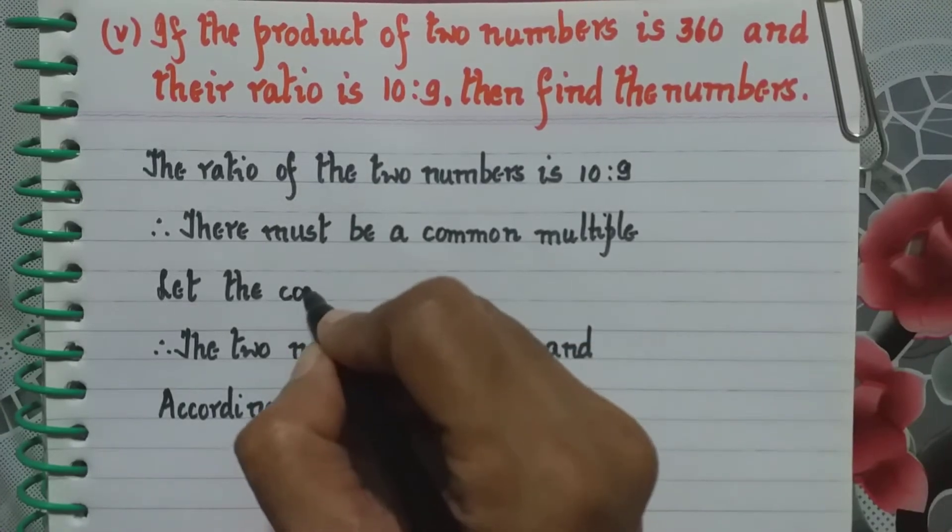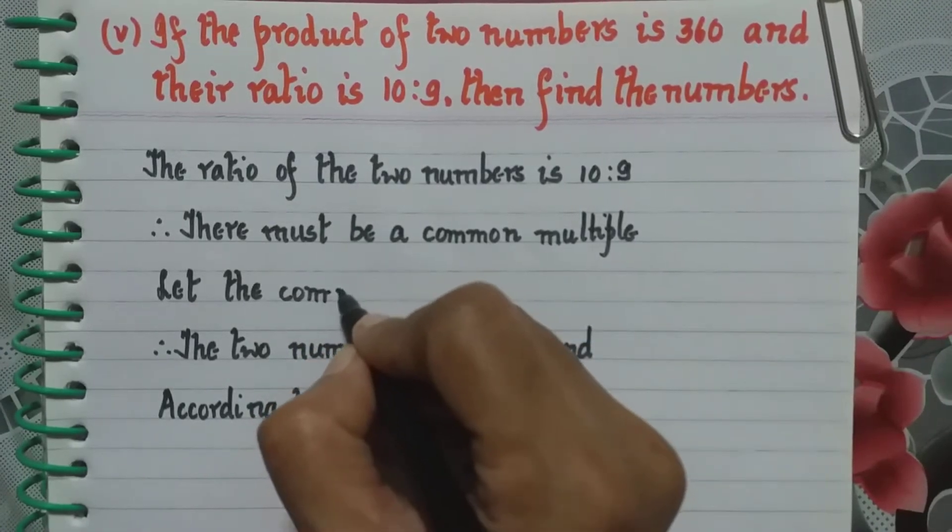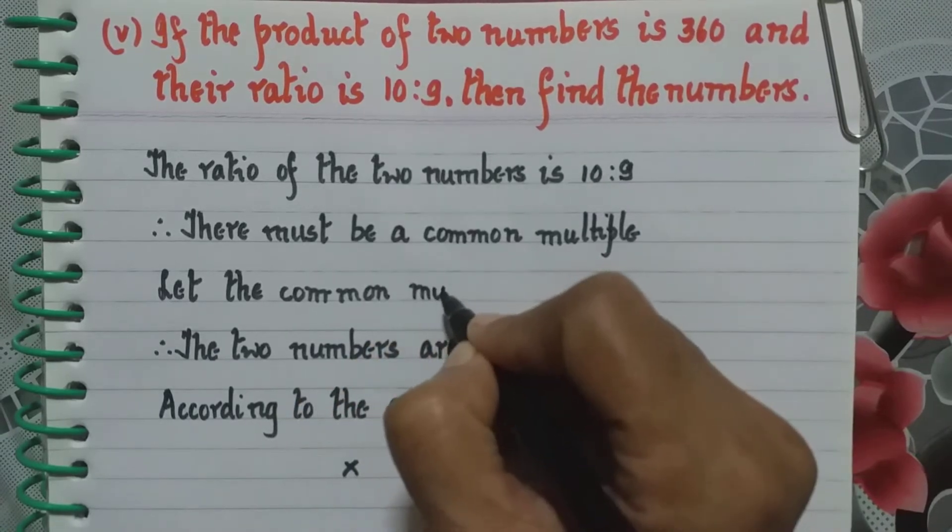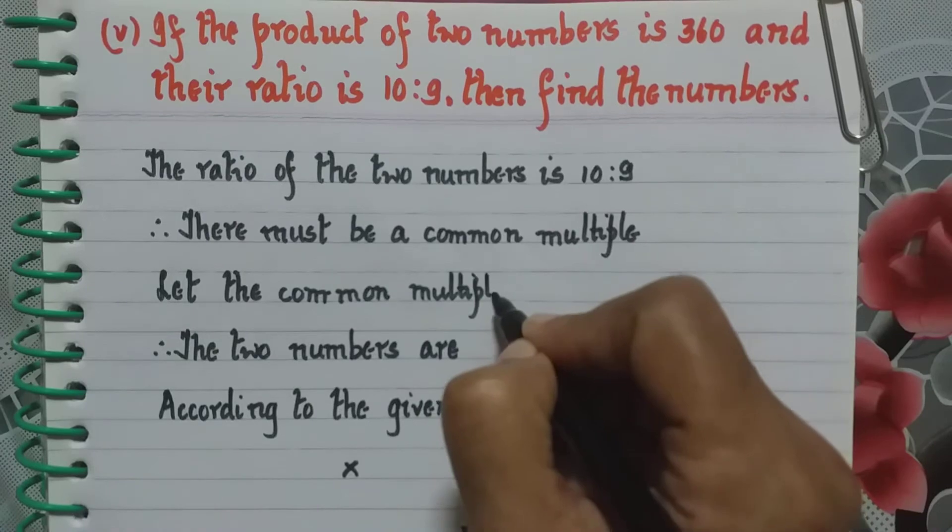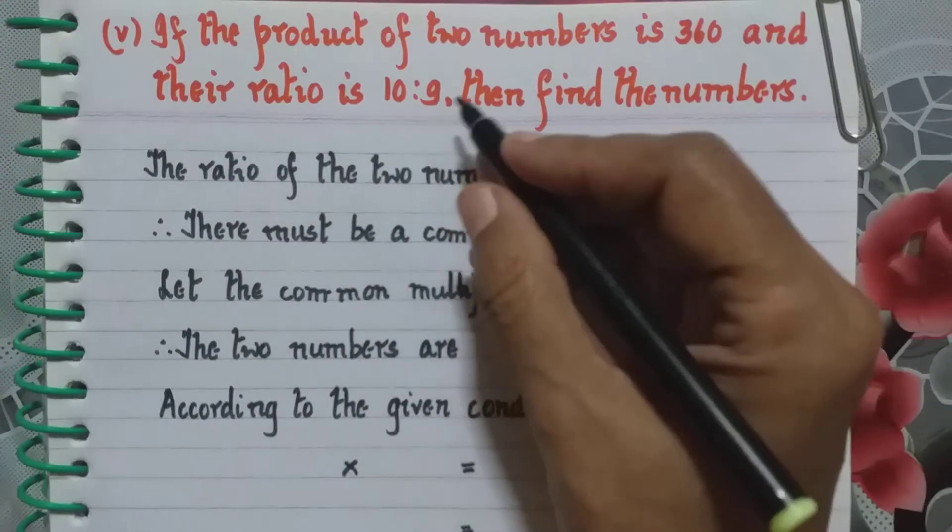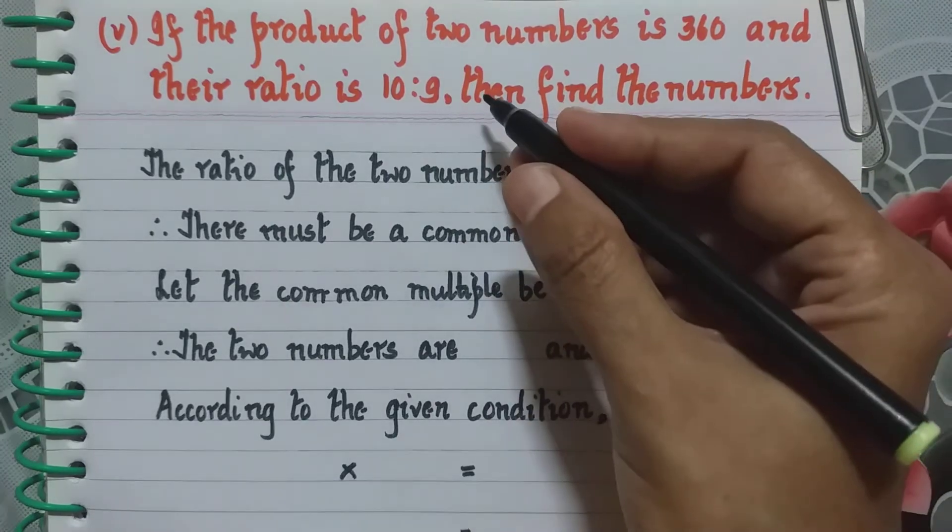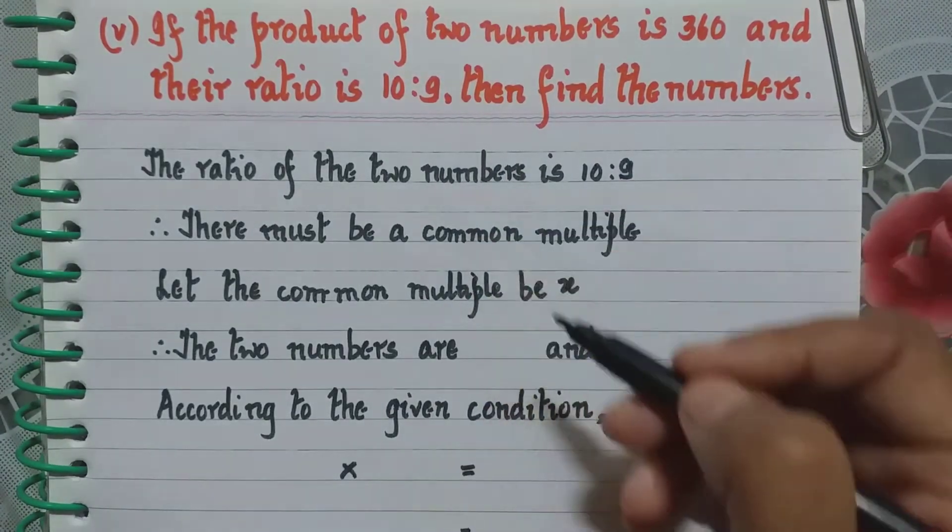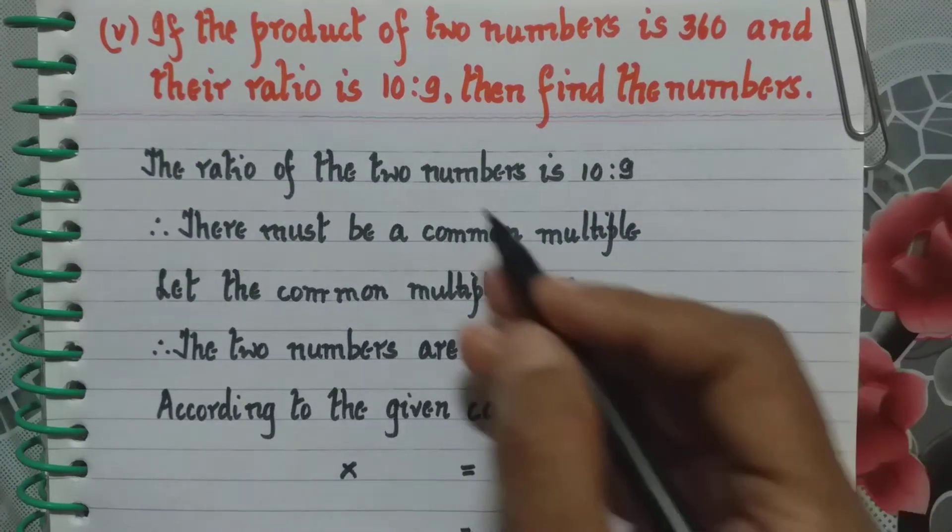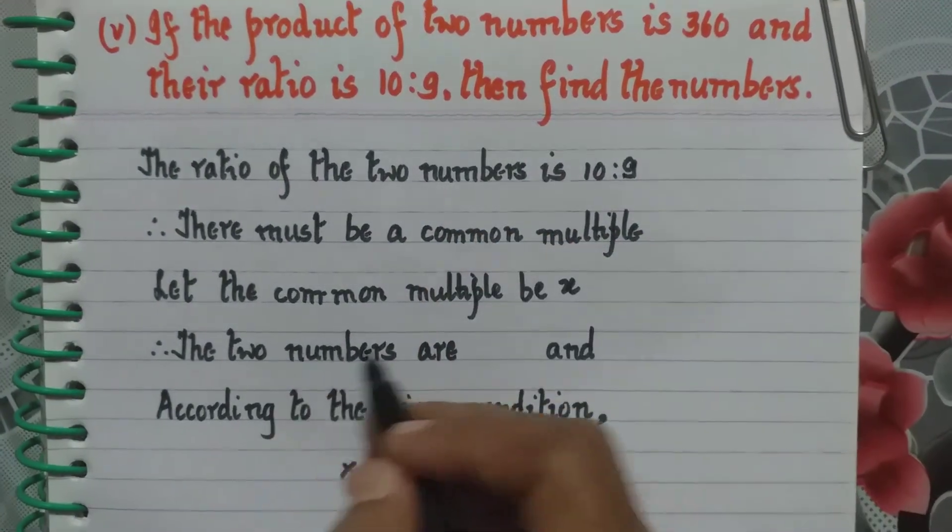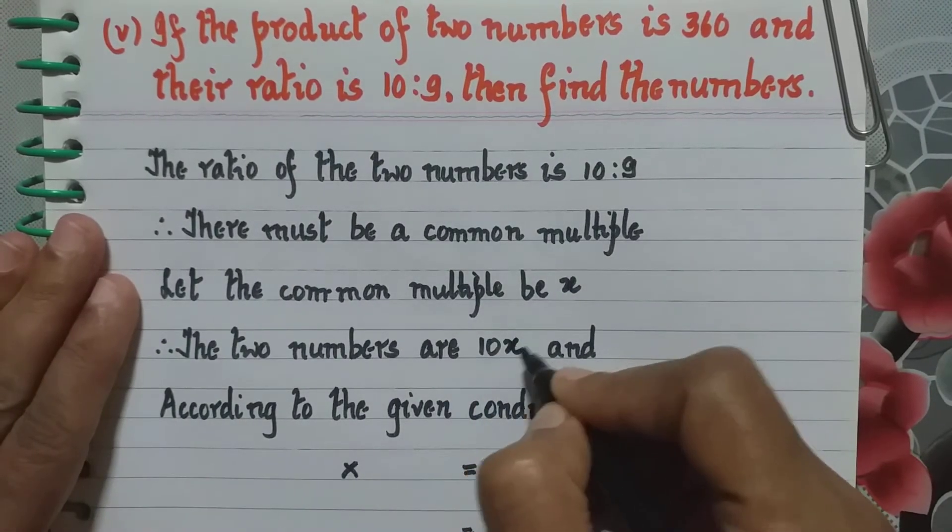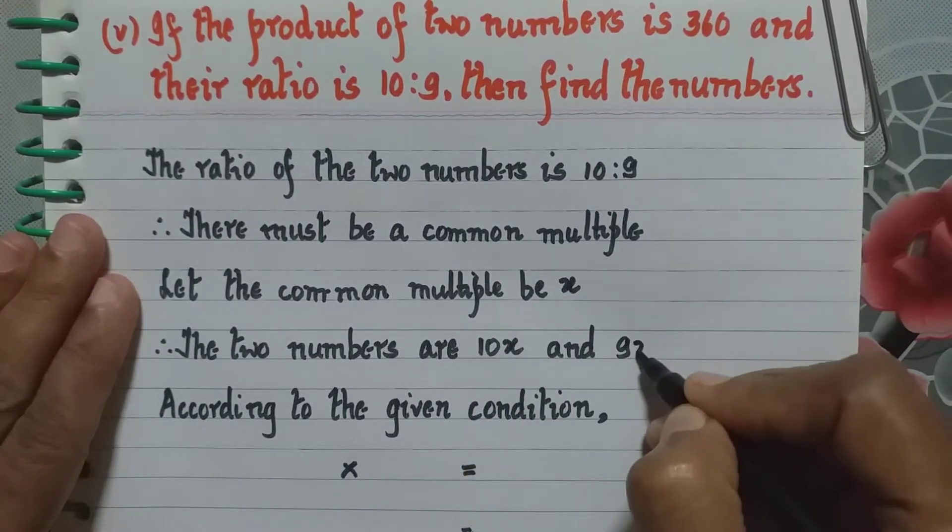So let the common multiple be x. What is the ratio of the numbers? 10 is to 9. So what will the numbers be? 10 into x and 9 into x. Therefore 10x and 9x. Therefore the two numbers are 10x and 9x.